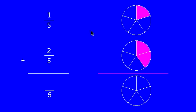To add or subtract fractions, the pieces have to be the same size, in this case fifths. So the size of the pieces doesn't change, and two pieces plus one piece gives you three pieces.